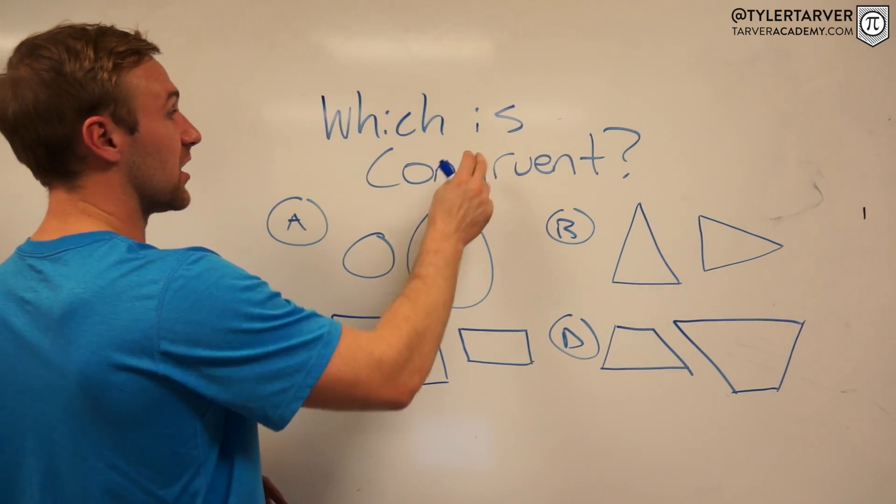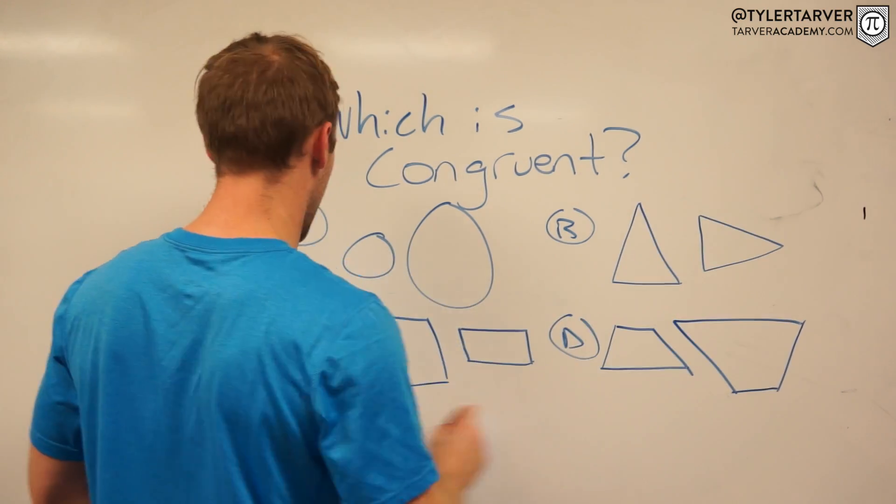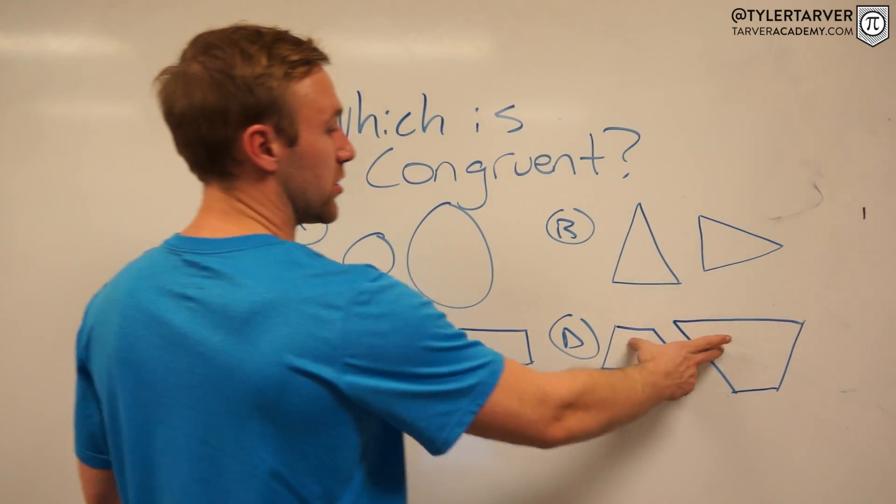Let's read the problem. Which is congruent? You've got A, which are two circles, B, two triangles, C, two rectangles, or D, two trapezoids.